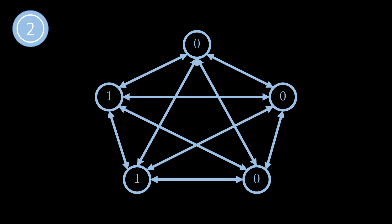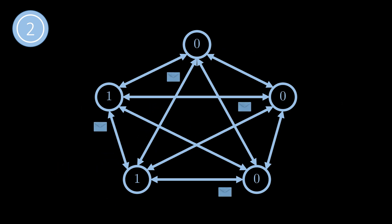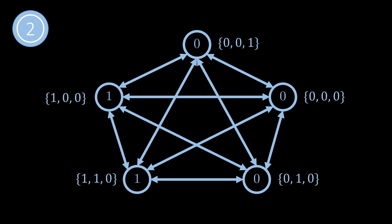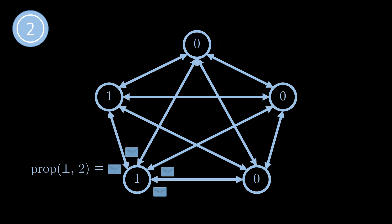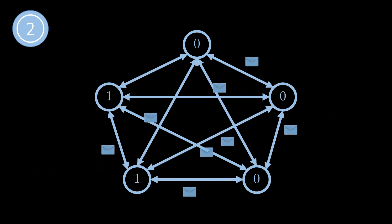In round two the same steps happen again. First each node broadcasts its value; the node in the bottom left sends value one for round two. Again all nodes collect three values. If they receive both zeros and ones there is no proposal. In the example here one node only receives zeros, so that node proposes the value zero. In the proposal step, while the node in the bottom left again sends an empty proposal, the node in the top right sends the proposal zero.